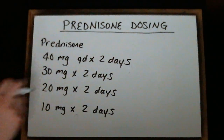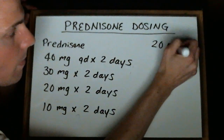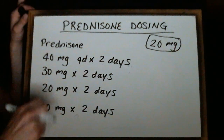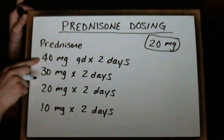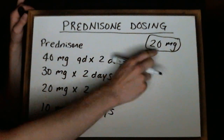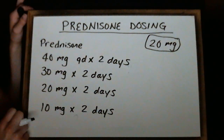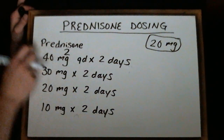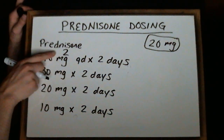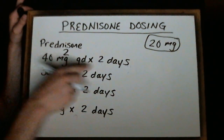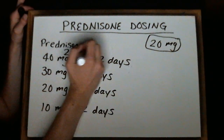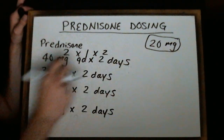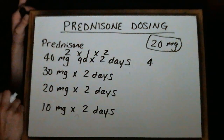If we base this off a 20 milligram tablet, the first step is to take the strength desired — in this case 40 milligrams — and divide by the strength we're going to use, 20 milligram tablets. So 40 divided by 20 is 2. We then follow the same procedure as before: multiply by the frequency, once a day, times 2 for the number of days at that strength. So 2 times 1 times 2 gives us 4 tablets for the first line.